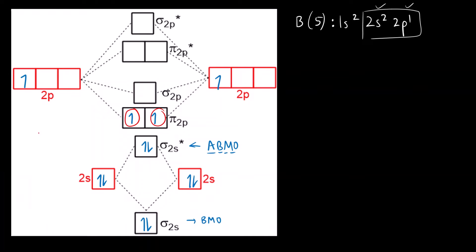So B2 is going to be paramagnetic due to the presence of two unpaired electrons.